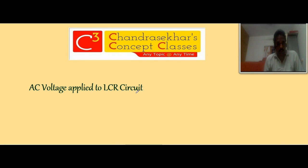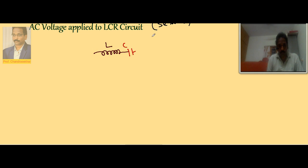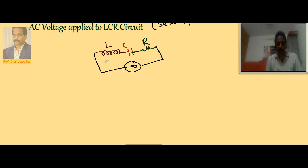Let us consider AC voltage applied to a series LCR circuit, where all three components — inductor, capacitor, and resistor — are connected in series. An inductor of self-inductance L is connected to a capacitor and then a resistor. This arrangement is connected to an AC source, and is called a series LCR circuit.